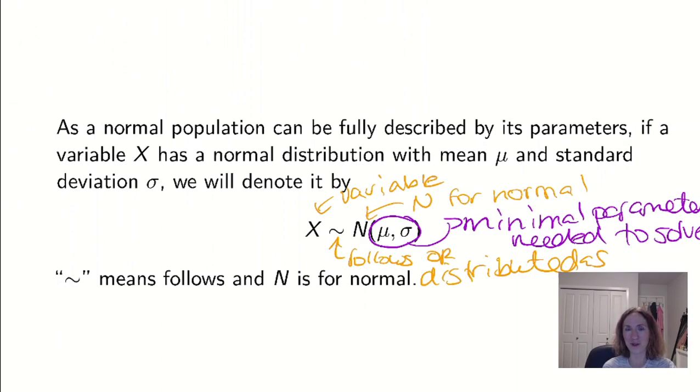All right, now that we know what the distribution looks like and how to categorize it, we're going to start to look at how do we find probabilities next.